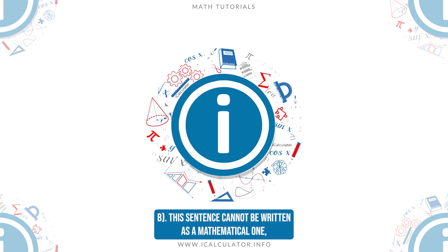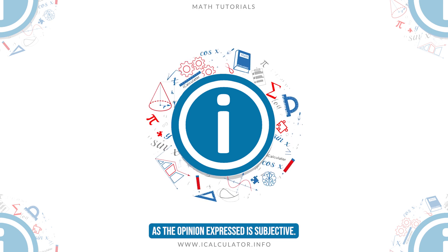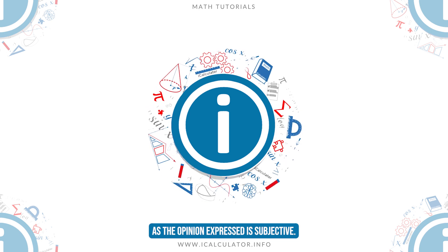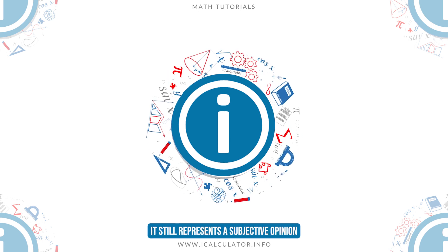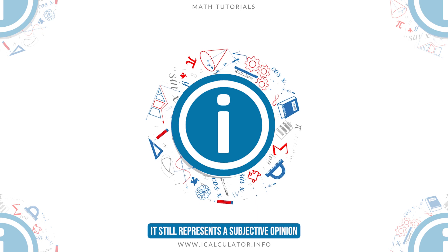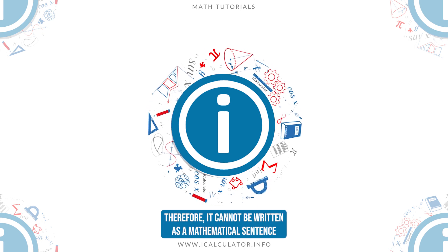B: This sentence cannot be written as a mathematical one as the opinion expressed is subjective. C: Despite two numbers appearing in this sentence it still represents a subjective opinion. Therefore, it cannot be written as a mathematical sentence.